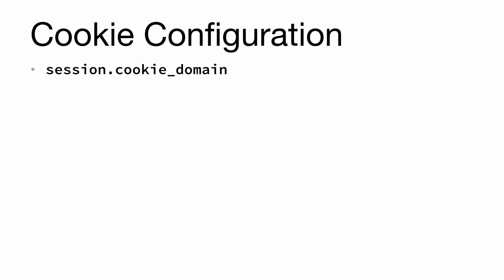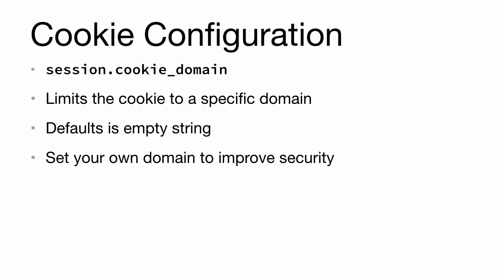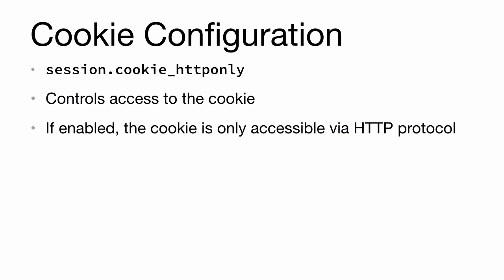For cookie configuration, we have session.cookie_domain, which limits the cookie to a specific domain. The default is an empty string, and for better security you should set your own domain. Next is session.cookie_httponly — if enabled, the cookie is only accessible via the HTTP protocol. You won't be able to access it through a localhost or save the data in your system and use it.